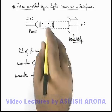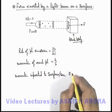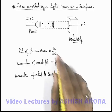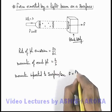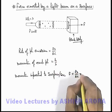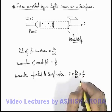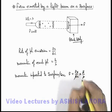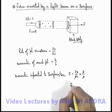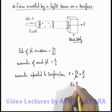This can be written as number of photons incident per second, which is Pλ/hc, multiplied by the momentum of each photon, that is h/λ. Here h and λ get cancelled out, and the value of force exerted we are getting is P/c.